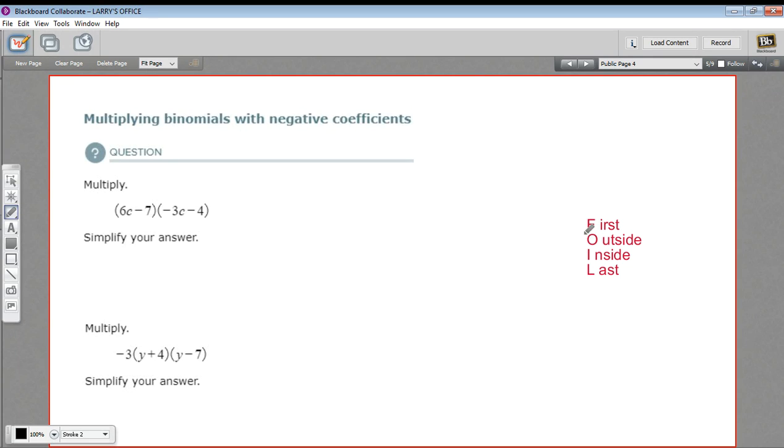We're going to multiply the first terms, then the outside terms, then the inside terms, and then the last terms. And in the second problem, we've got a complication here. We've got a negative 3 out front of everything. We'll deal with that at the end.